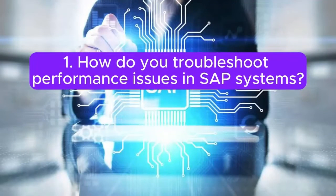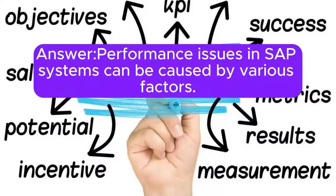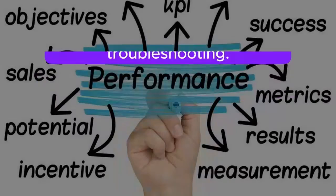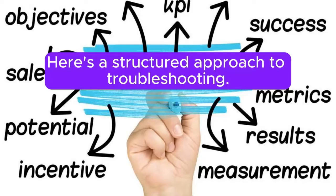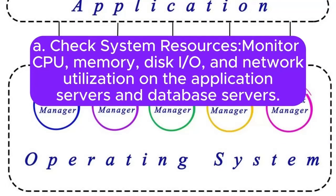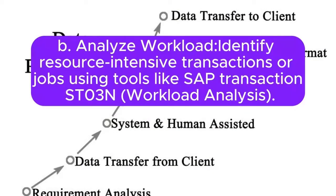Question 1: How do you troubleshoot performance issues in SAP systems? Performance issues in SAP systems can be caused by various factors. Here's a structured approach to troubleshooting. A. Check system resources: monitor CPU, memory, disk I/O, and network utilization on the application servers and database servers. B. Analyze workload: identify resource-intensive transactions or jobs using tools like SAP transaction ST03N workload analysis.